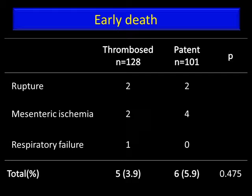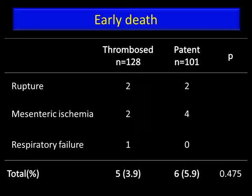This slide shows early death. In the thrombosed group, five patients died within 30 days after admission. In the patent group, six died. The early mortality rate did not differ between the two groups. Notably, all patients with mesenteric ischemia died in the early period.